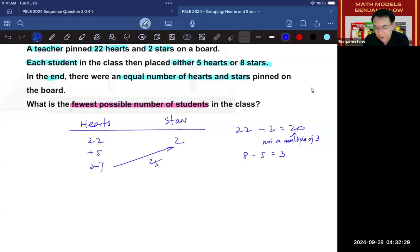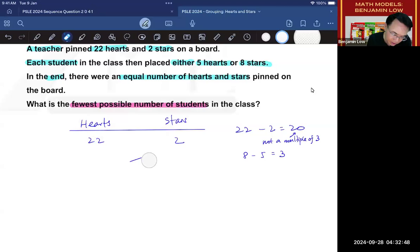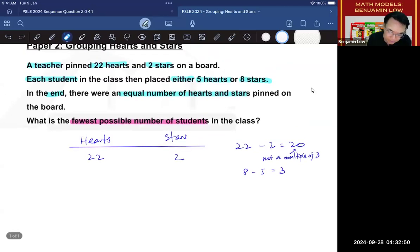So this obviously doesn't solve the problem. Moreover, if I want the students putting the stars to catch up with the students putting the hearts so that they can become equal, I need more students putting stars. So obviously, this is not going to work. So I'm going to take this away. This is like a mental process, but I'm writing it here for you to understand.